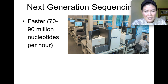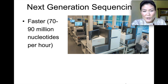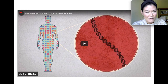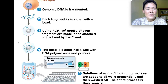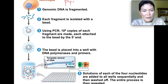Now we have next generation sequencing, and there are many different kinds. The one mentioned in your textbook is called pyrophosphate sequencing, which is much faster — 70 to 90 million nucleotides in an hour. What you do is take the DNA, cut it up into little pieces, and take each fragment and put it in a little well on a tray. You put that single fragment in a well with a bead, and using PCR you end up with a million copies of that same fragment attached to the bead.